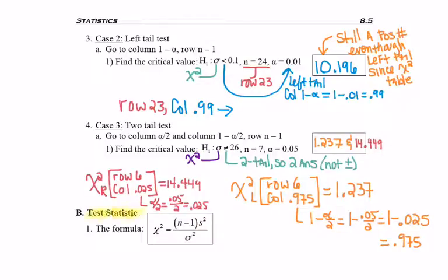Lastly, when finding a test statistic for a chi-squared test, the formula is going to be n minus 1 times s-squared, the sample standard deviation squared, divided by sigma-squared. This might look similar to confidence intervals, except you'll notice there's no square roots like in confidence intervals. And also in the denominator, it was always a chi-squared left or right, whereas here it's actually sigma-squared.